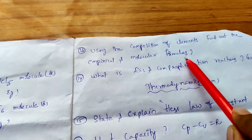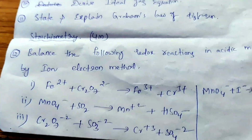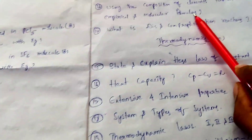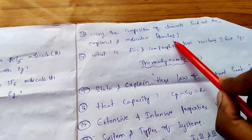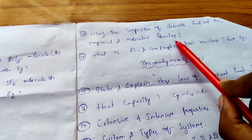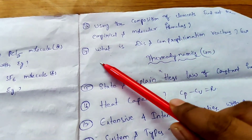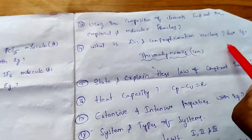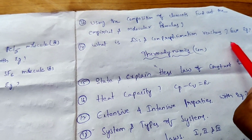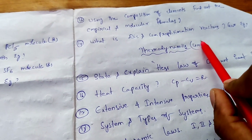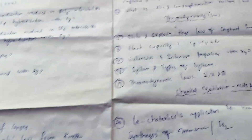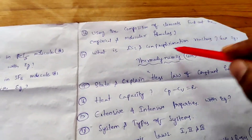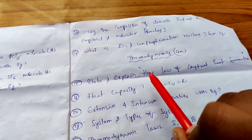From stoichiometry: find out empirical and molecular formulas — these calculations are important. Also: What are disproportionation and comproportionation reactions? Give examples. This is an important question. From these questions you have a chance to attempt 2.